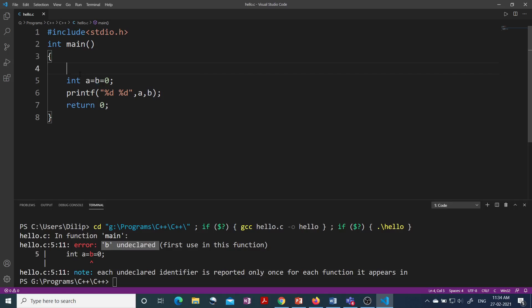So if you do int b before that, that means you are now defining the b variable and then you want to initialize this a and b using 0 value. Now let's see what is the answer.